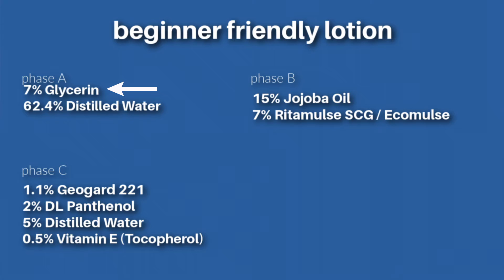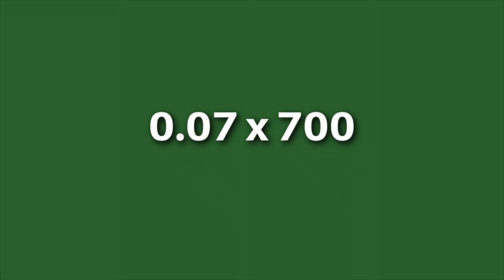Let's do this again with 7% glycerin. Take the decimal, move it up two spaces — now you have 0.07. Multiply 0.07 by 700, which is our batch size, and you get 49. Then of course you just do that for the entire formula.